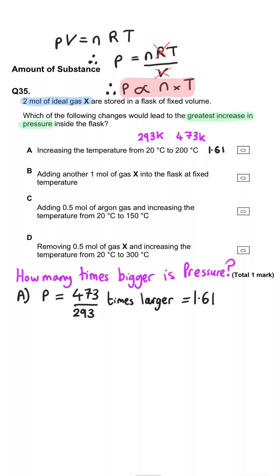In B, the moles is going to increase from 2 to 3. Well, that will be 3 divided by 2 times bigger. So 1.5.